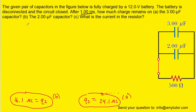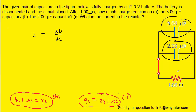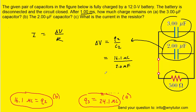For Part C, the current through the resistor equals the potential difference divided by the resistance. We have a 500 ohm resistor, but we still need the potential difference. Since all three circuit elements are in parallel, they share the same potential difference. We use the 2 microfarad capacitor: dividing its charge by its capacitance — both in micro units, so the result is in standard volts — gives approximately 8.04 volts.